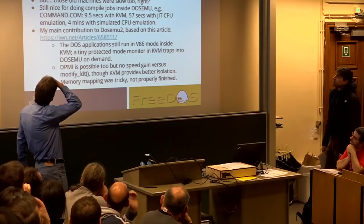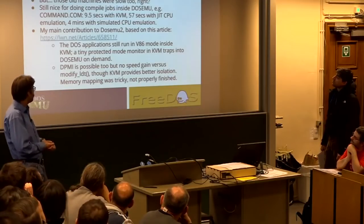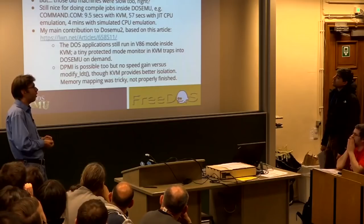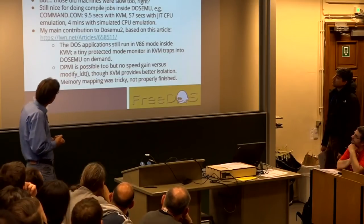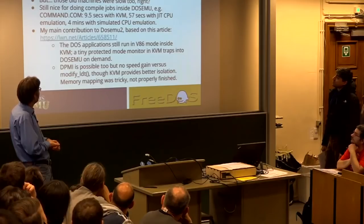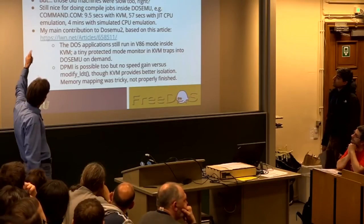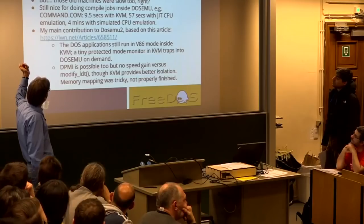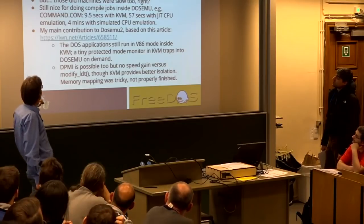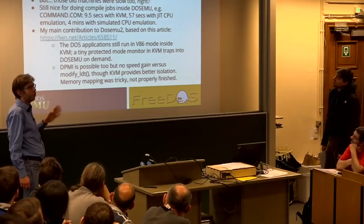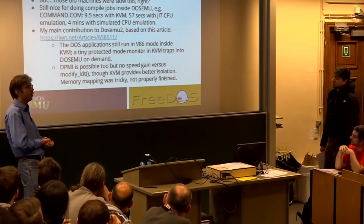KVM was basically my contribution to DOSEMU2. I read an article on LWN that explained how to use KVM and gave a little example of getting into a very basic DOS-style setup. I implemented that into DOSEMU and found it gives a significant performance boost. I went from compiling a DOS utility named command.com — 57 seconds with our fastest JIT emulator, or even four minutes with the simulated CPU emulation used as a backup — down to nine and a half seconds. At that point, there was no advantage to booting with an i386 kernel just to get VM86, because KVM is just as fast.